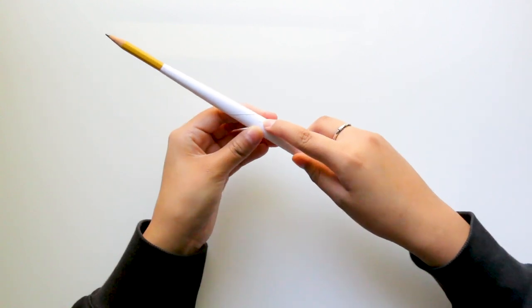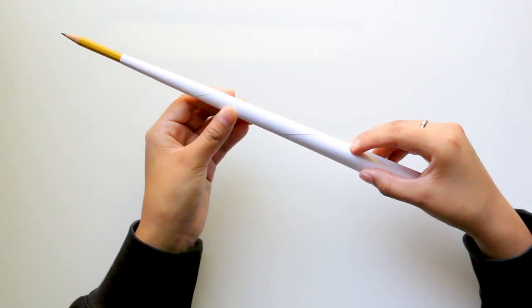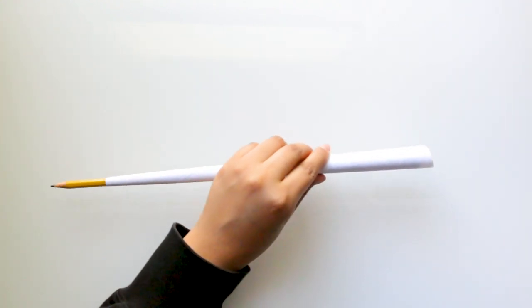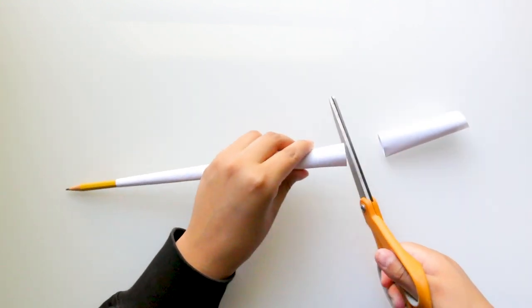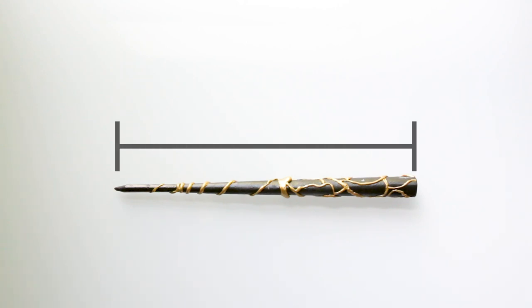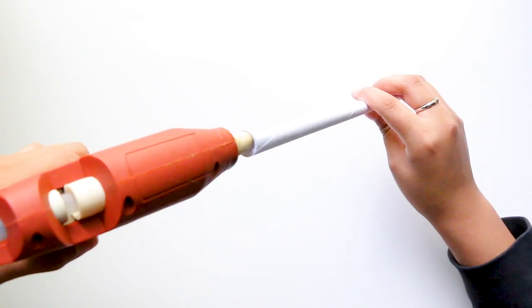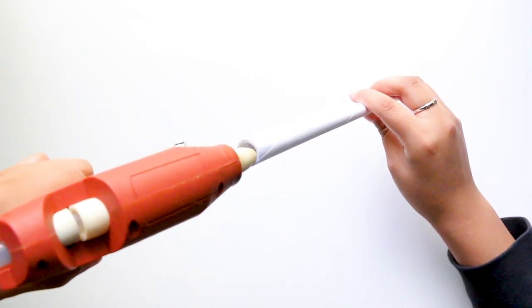Next, find where the pencil ends and determine how long you want the wand to be, then cut off the excess. Here's a wand I've made previously, and as you can see, the wand I just made is just a tiny bit shorter. Now hold the wand by the pencil side, not the cone part, and fill the cone with hot glue.